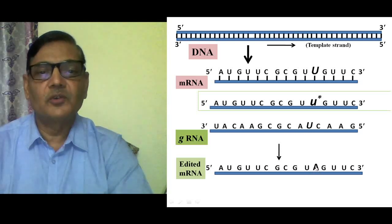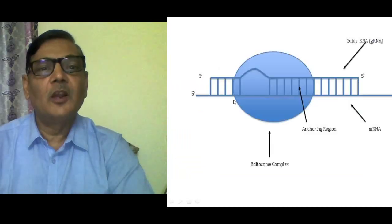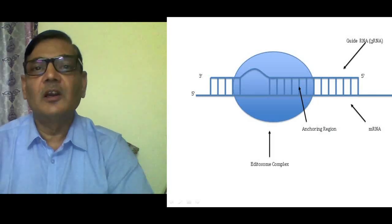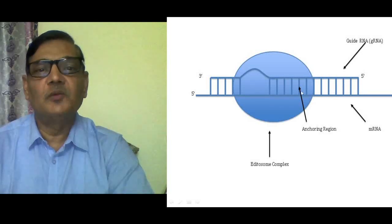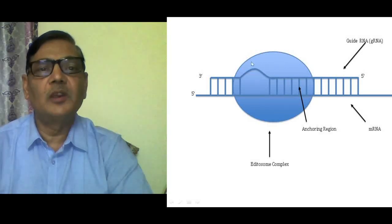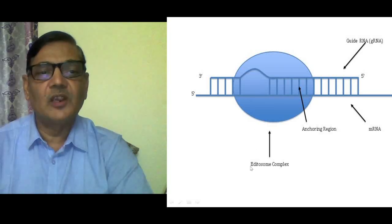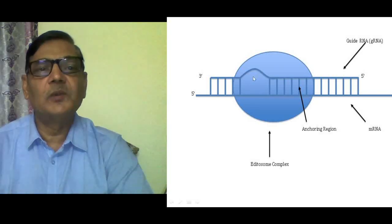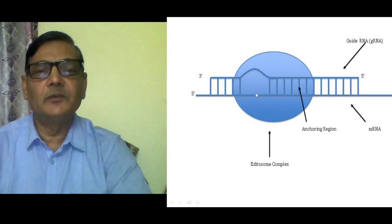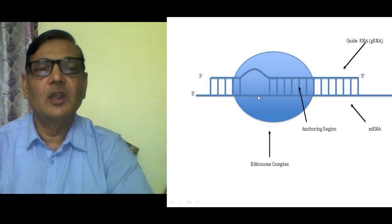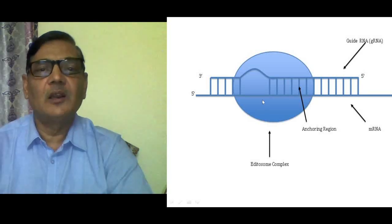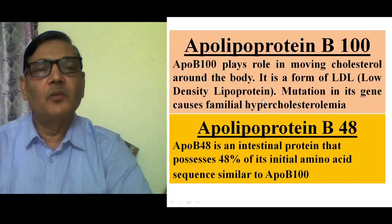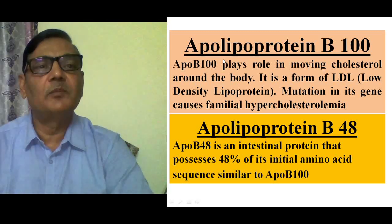In this figure, the upper structure is a guide RNA — a small RNA molecule which shows complementary pairing with the messenger RNA. It binds with the messenger RNA, and then a number of enzymes and proteins get bound to this site. All these are referred to as the editosome complex. Such enzymes help in substitution, insertion, or deletion of a nucleotide, depending on what sort of RNA editing is taking place.